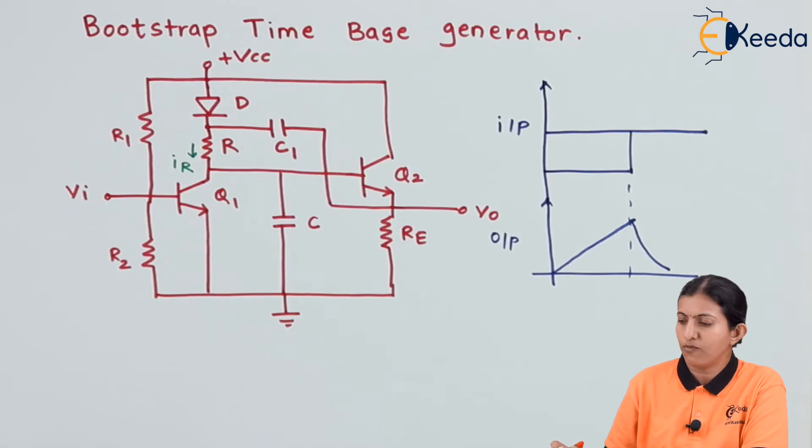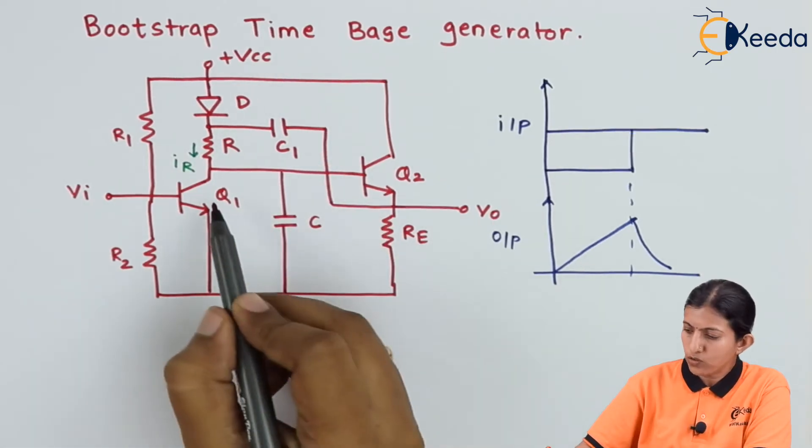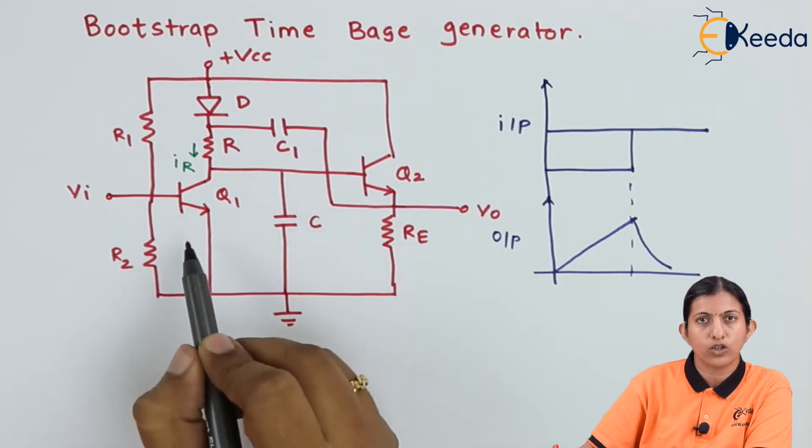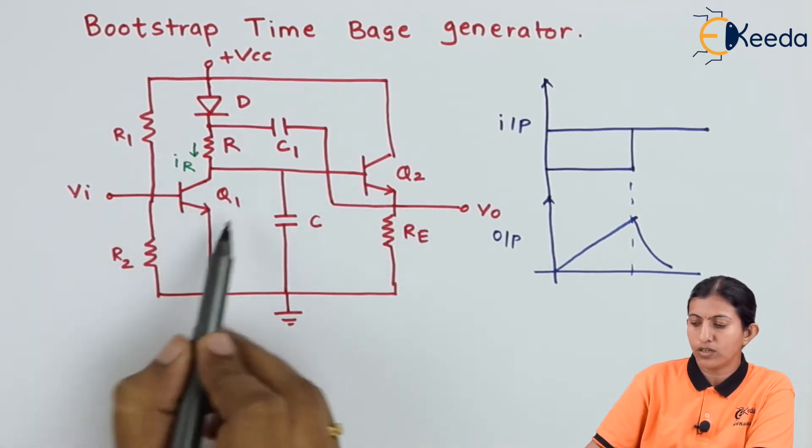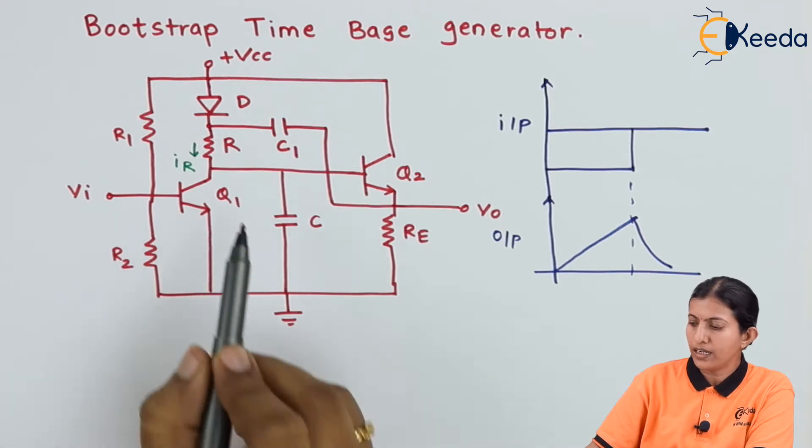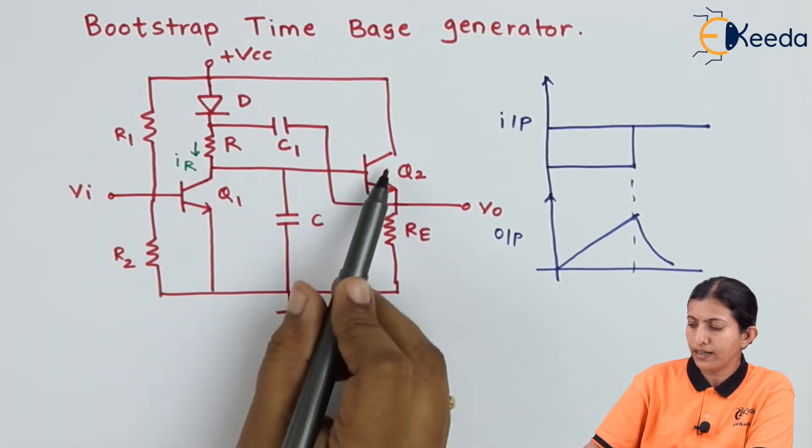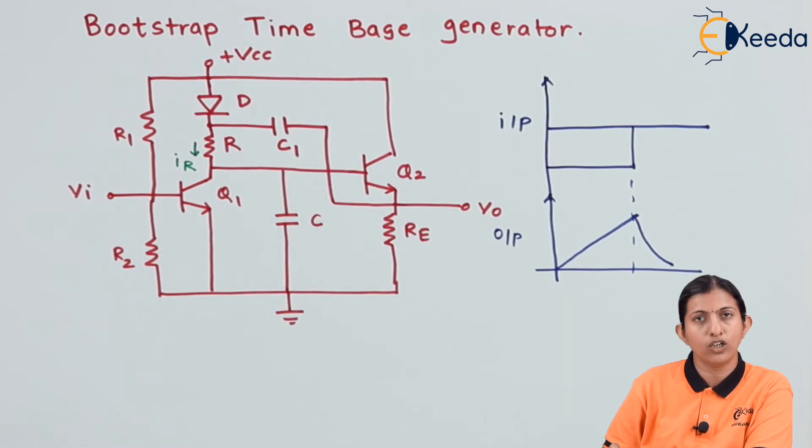Here is the diagram for the bootstrap time-based generator. We are using two transistors, transistor Q1 and transistor Q2. The input is given to transistor Q1 and the output of Q1 is directly given to transistor Q2.